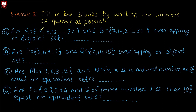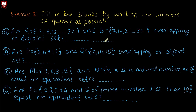Set A contains multiples of 4: 4, 8, 12 up to 32. The range 4 to 32 gives us multiples of 4. Set B contains multiples of 7 from 7 to 35. Now these two sets — are they overlapping or disjoint? That is what we need to fill in the blanks.